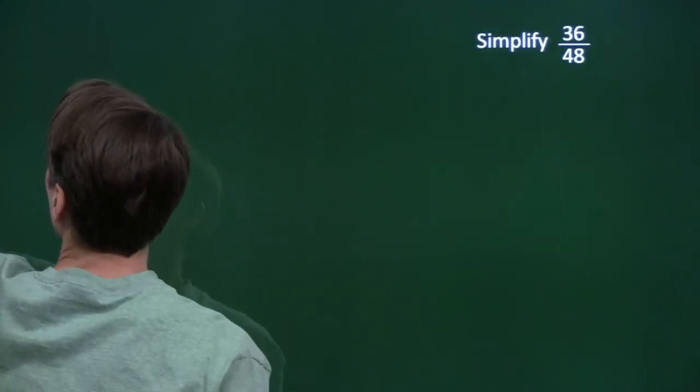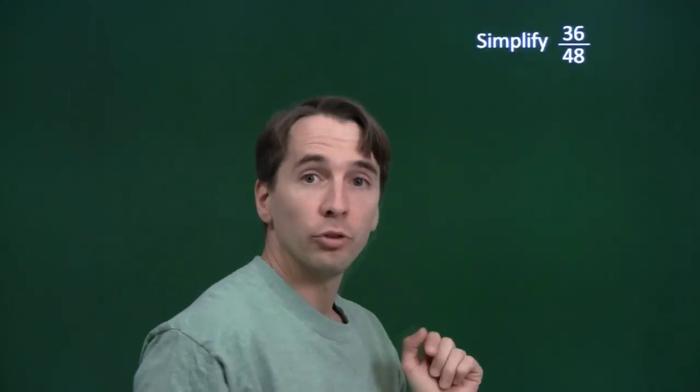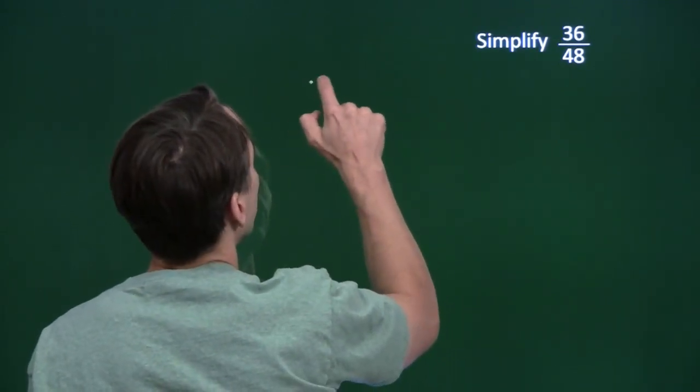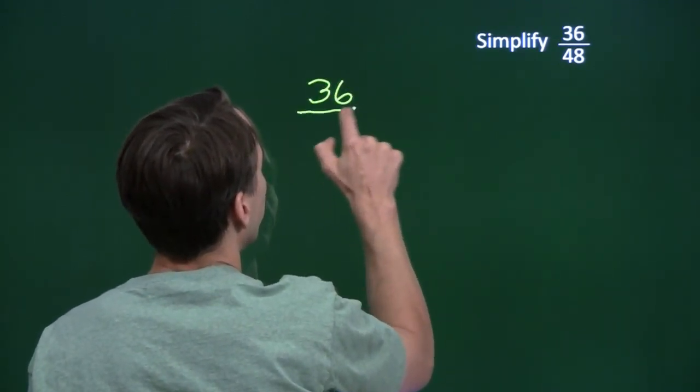Let's try that out with a slightly more complicated fraction. We'll try that out with 36 over 48. See a common factor? Yeah, that's right. They're both even. We've got a common factor of 2.